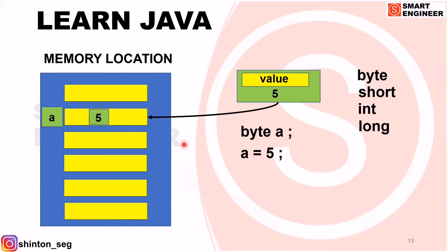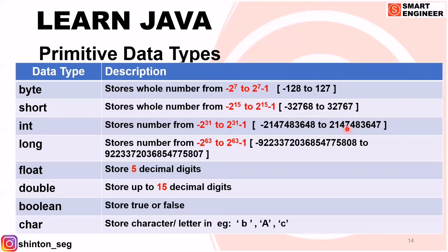Now I have a doubt: up to what number can we store? Is there any limit? Why are we learning short, int, and long? If byte can store numbers, then why do we need short, int, and long? So let's look at a table. Starting from byte — there is a limit for storing numbers. It can store all numbers from minus 2 raised to 7 to 2 raised to 7 minus 1, that is from minus 128 to 127. I will make it easy for you.